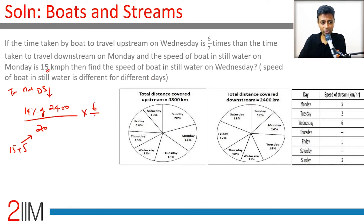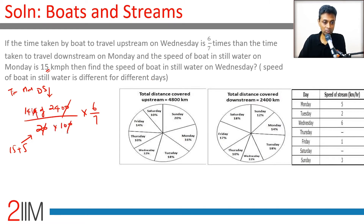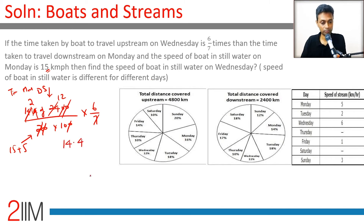Monday downstream time = (14/100 × 2400) / 20 = 336 / 20 = 14.4 hours. Wednesday upstream time is 6/7 of this: 14.4 × 6/7 = 12 hours. So Wednesday upstream travel takes 14.4 hours — working through the arithmetic: 14% of 2400 is 336, divided by 20 gives 14.4 hours for Monday downstream.